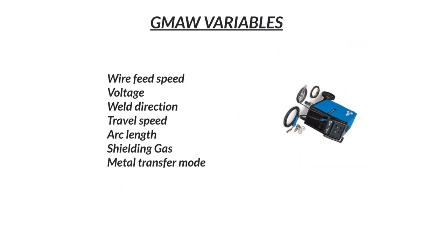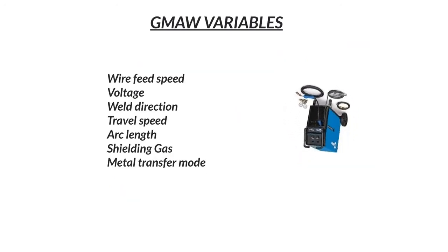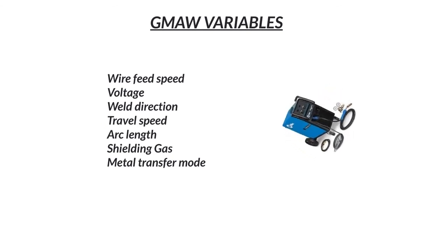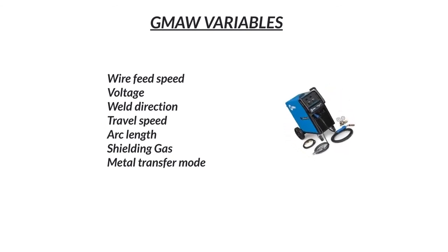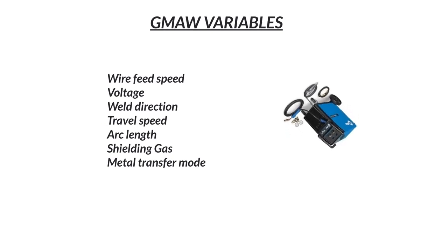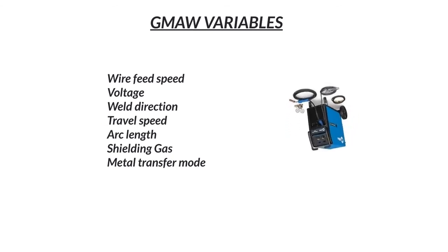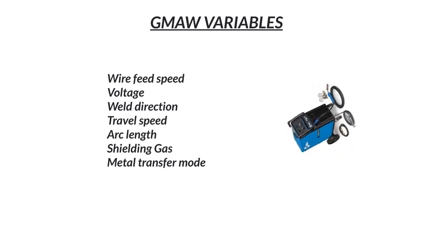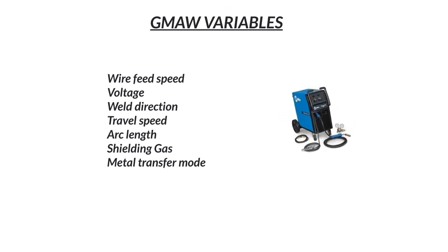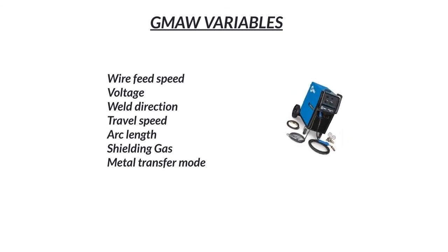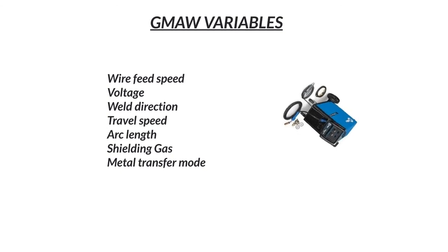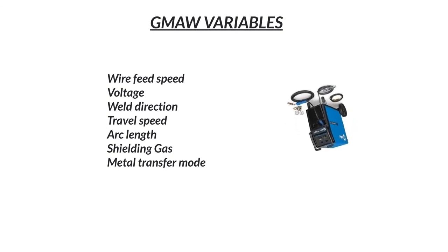That wraps up a handful of variables to consider while MIG welding. In review: wire feed speed, voltage, weld direction — push, pull, perpendicular — travel speed, arc length, shielding gases, and different metal transfer modes.